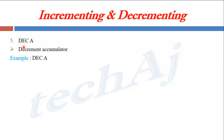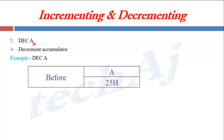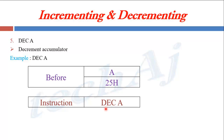Similarly, the DEC A instruction will decrement the value of the accumulator. Suppose initially the accumulator has the value 25H. The instruction DEC A will decrement the accumulator by 1.